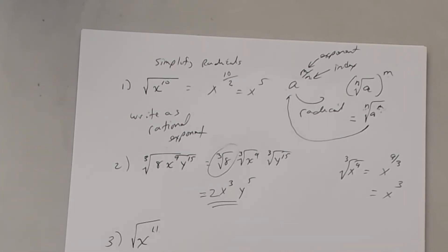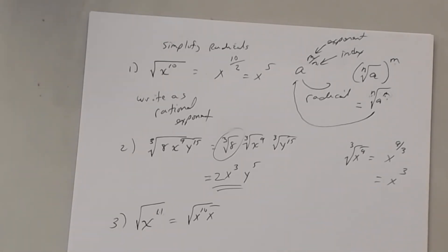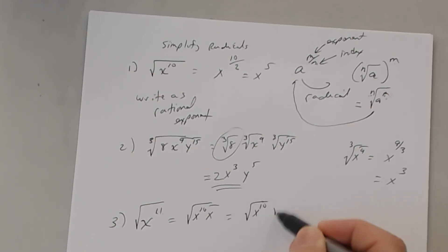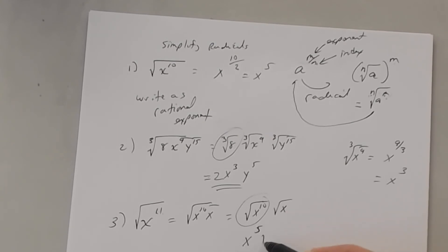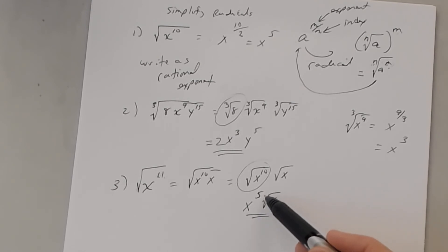The answer is 10. So rewrite it as the square root of x to the 10th times x — you agree that's x to the 11th. Split it apart: square root of x to the 10th times square root of x. Square root of x to the 10th is x to the fifth, and square root of x stays as is. You cannot simplify the square root of x because that exponent of 1 is less than the index, so you're done: x to the fifth times square root of x.